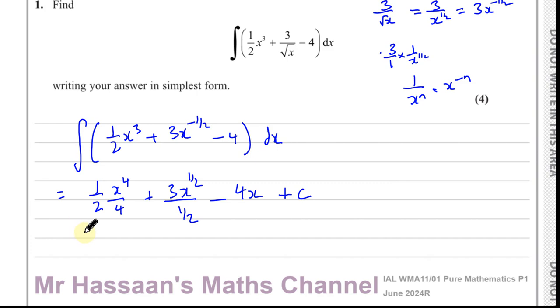So now we can continue. So you have a half times x to the power of 4 over 4, which is 1 over 8, x to the power of 4. And when you're dividing by a fraction, it's like you multiply by its reciprocal. So 3 divided by a half is 3 times 2 over 1, and 3 times 2 is 6, and this gives you 6x to the power of a half. And you've got minus 4x and plus c. So here we have our answer to the question.